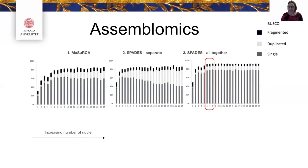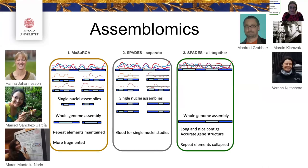With method three — putting all the data together — we get higher completeness already at six or seven nuclei, with over 80% completeness. Using Masurka gives a very accurate estimate of repeats, but the assemblies are very fragmented. SPAdes for single nuclei gives better individual nucleus assembly but cannot be used for combining into a larger assembly. The third method, using SPAdes with all the data, gave quite nice long contigs and accurate gene structure, though the repeat complex was severely collapsed.